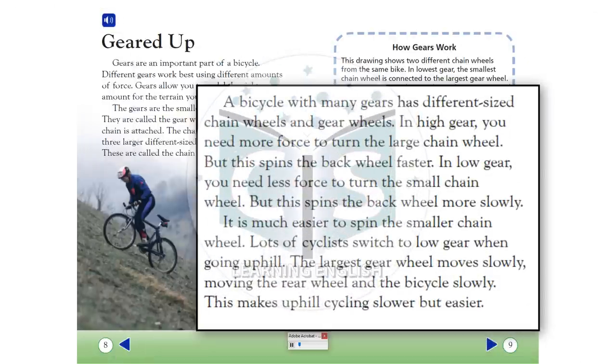A bicycle with many gears has different sized chain wheels and gear wheels. In high gear, you need more force to turn the large chain wheel, but this spins the back wheel faster. In low gear, you need less force to turn the small chain wheel, but this spins the back wheel more slowly. It is much easier to spin the smaller chain wheel.